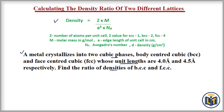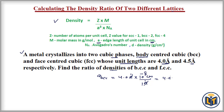Since the unit lengths of both lattices are given, we can find the volume of both lattices. Note that in the density formula, unit length is always measured in centimeters, so first we convert angstroms into centimeters. The unit length of BCC is 4.0 angstroms. Since one angstrom equals 10 to the power of minus 8 centimeters, the unit length of BCC becomes 4.0 multiplied by 10 to the power of minus 8 centimeters.